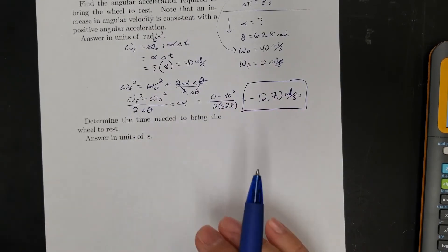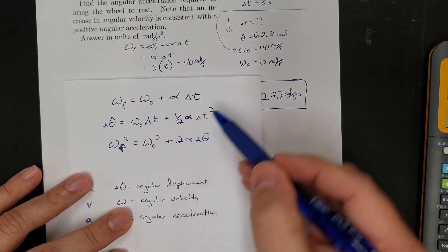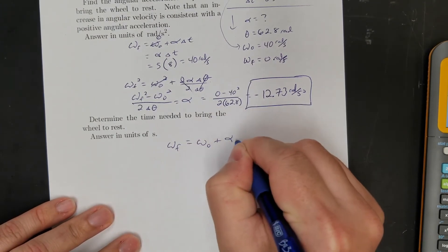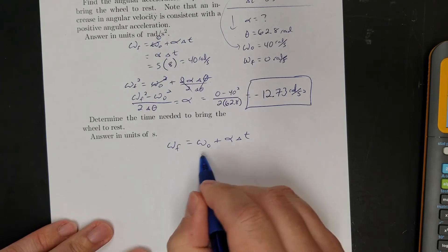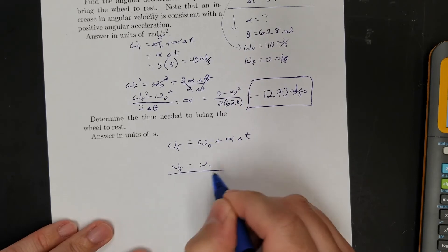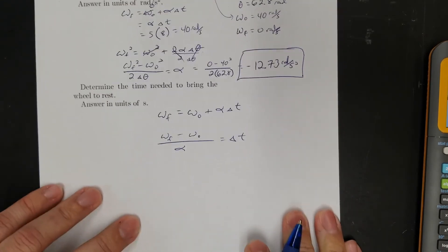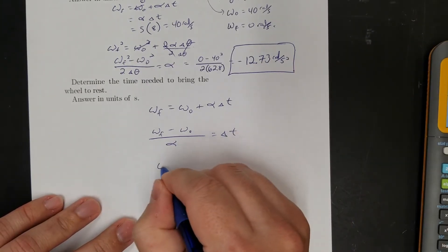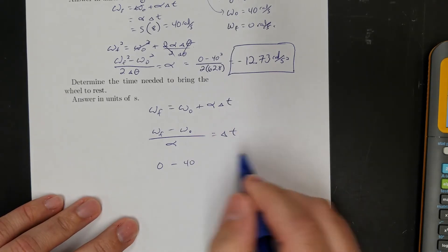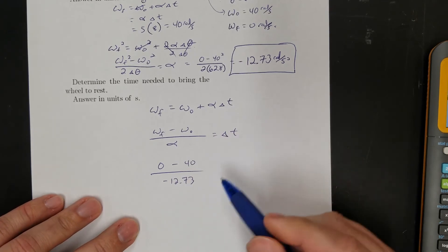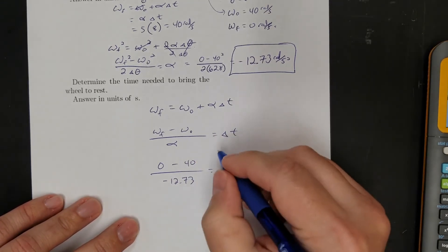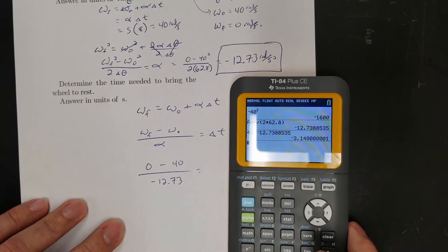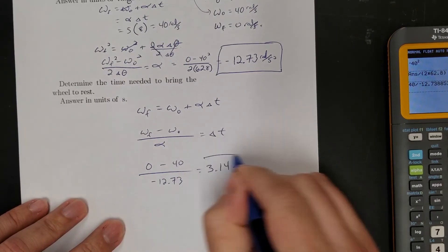Now I need the time to bring it to rest. I'm not solving a quadratic, so I'll use the first equation: final equals initial plus alpha times time, rearranged to time equals final minus initial over alpha. My final velocity is 0 and my initial is 40, divided by negative 12.73. The negatives cancel so time is positive — and interestingly, it comes out to about 3.14 seconds, which is pi seconds.